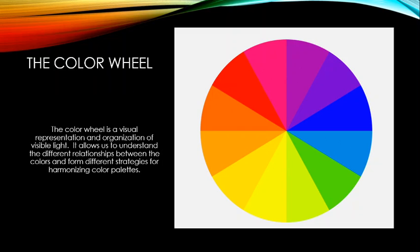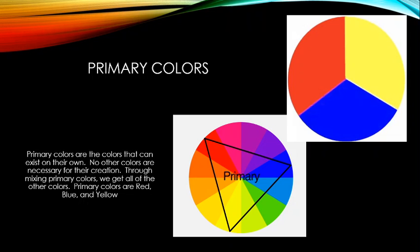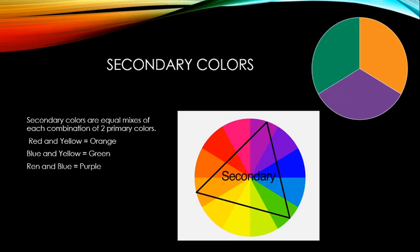First we have primary colors: red, blue, and yellow. Primary colors exist on their own — no other colors are needed to create them. They are pure hues, and all other colors exist by harmonizing and mixing these primaries.